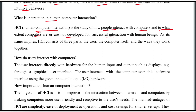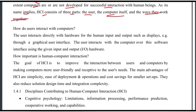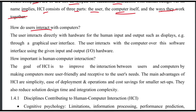As its name implies, HCI consists of three parts: human, computer, and interaction. The user and the computer work together — the way they interact is human-computer interaction. Human-computer interaction is the study of how users interact with computers.